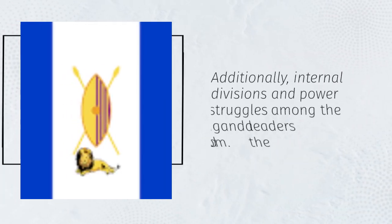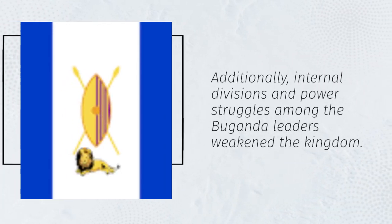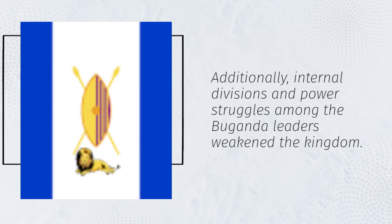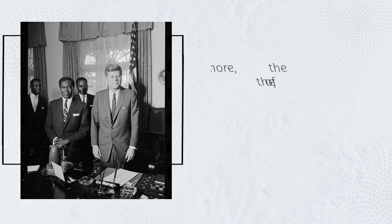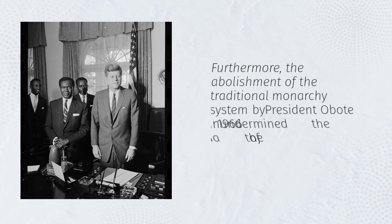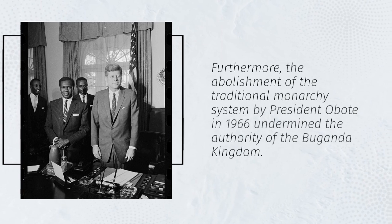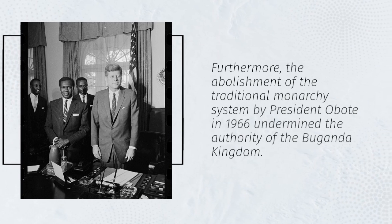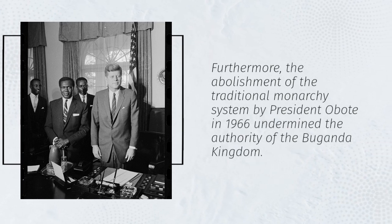Additionally, internal divisions and power struggles among the Baganda leaders weakened the kingdom. Furthermore, the abolishment of the traditional monarchy system by President Obote in 1966 undermined the authority of the Baganda Kingdom.